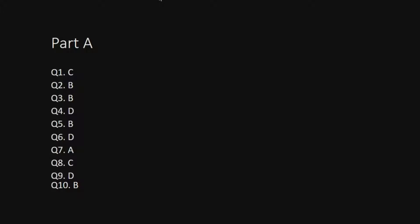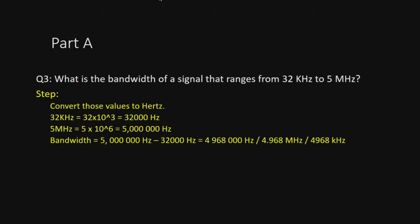For the theoretical questions, you can find the answers from the lecture notes or from the books. In this video we only discuss the calculation part. Look at question number 3 — it asks about bandwidth. What is the bandwidth of a signal that ranges from 32 kilohertz to 5 megahertz?